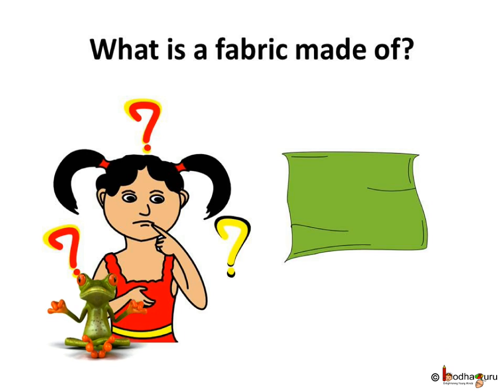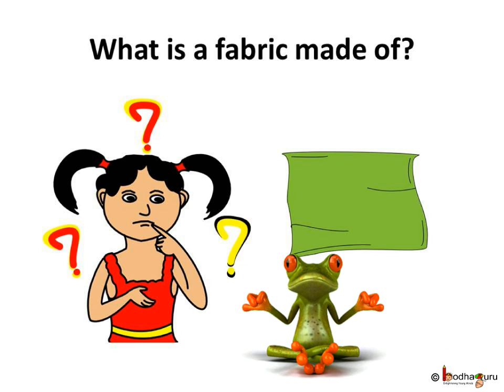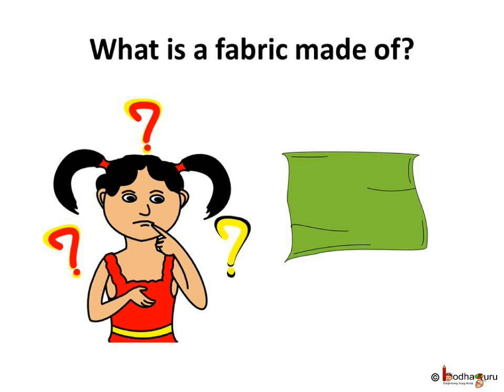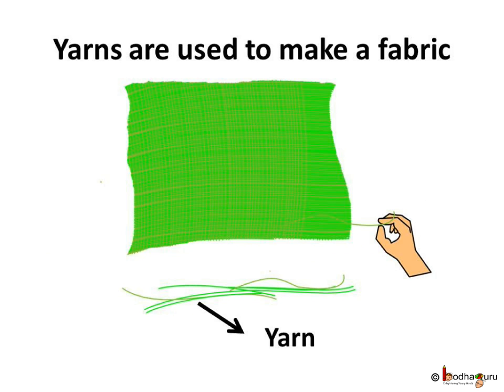What exactly is used to make a fabric? If we tear a piece of old ragged cloth and look at the edge where it is torn, we will find many strings. These are yarns. Different types of yarns are used to make different fabrics.